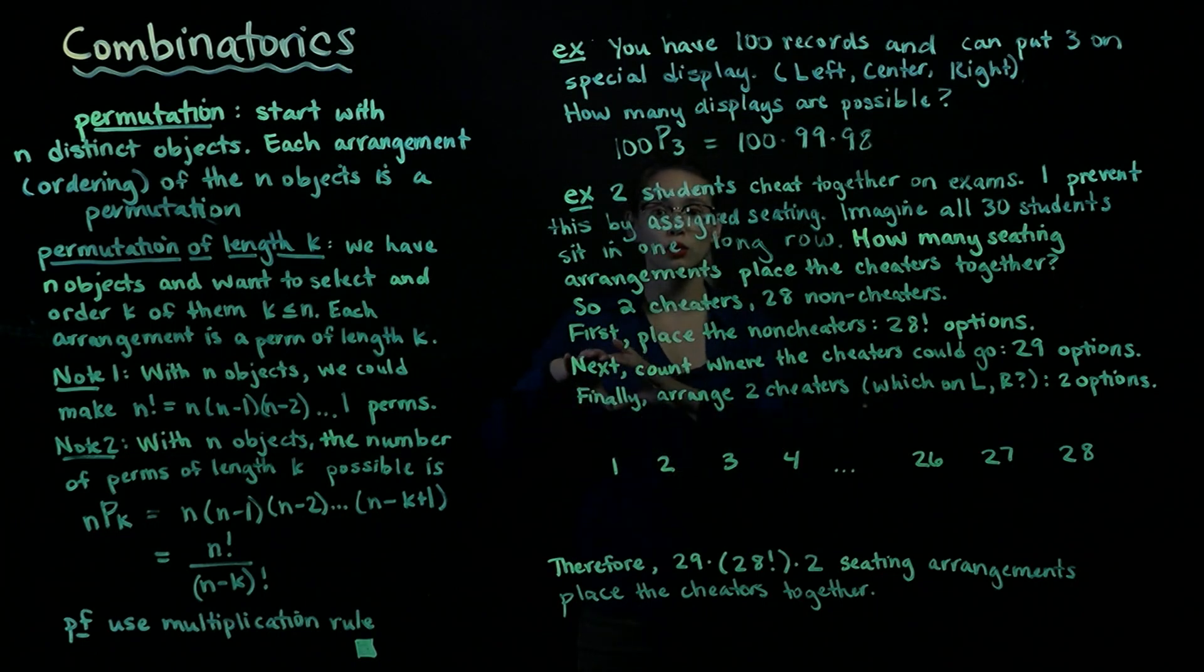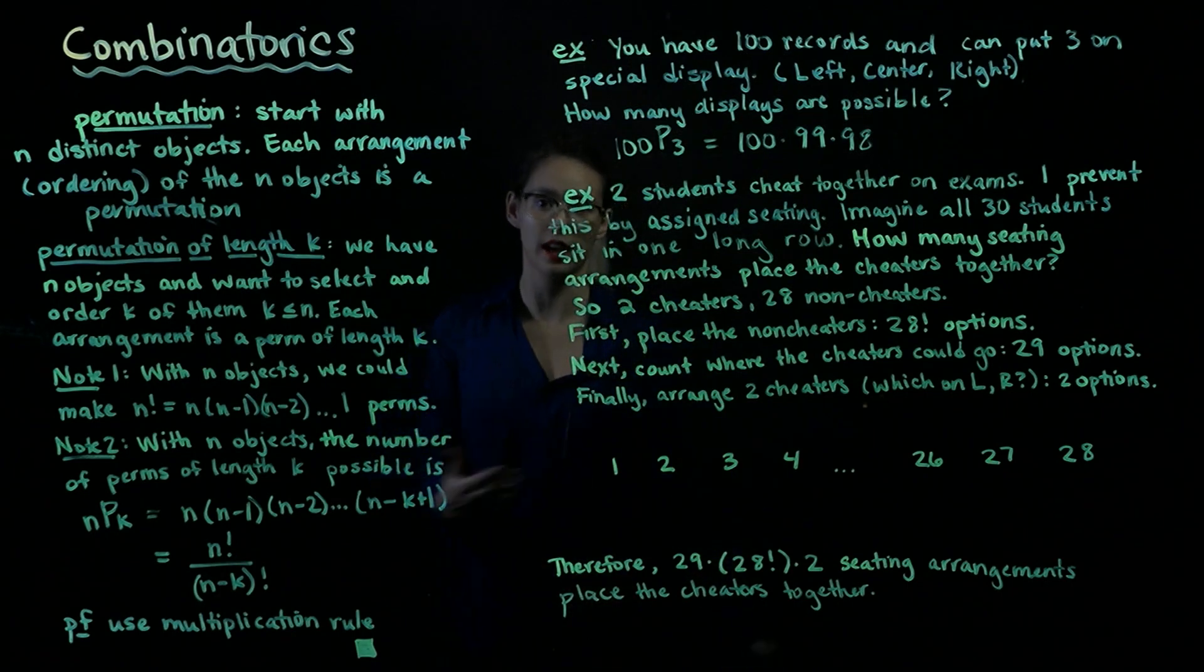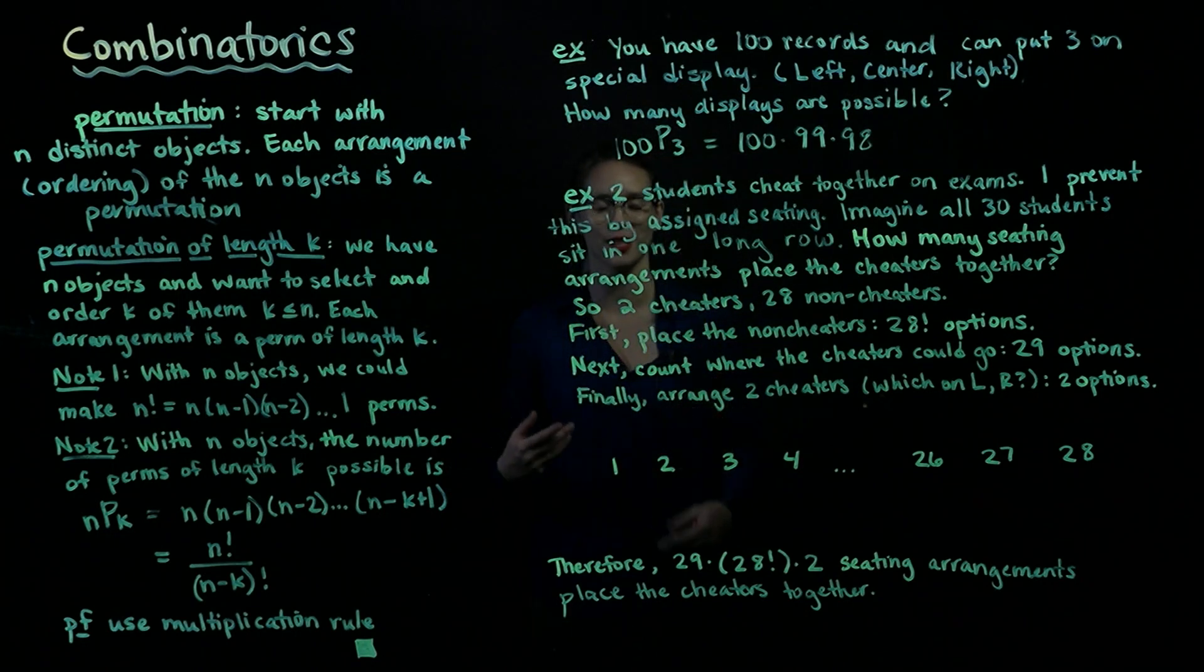Now, if we only want to choose some of the objects and then arrange them, we can call this a permutation of length k. So imagine we have n objects and we want to select k of them and order those k things. It's important that k is less than or equal to n because we can't have an ordering of more objects than we started with. So each arrangement is a permutation of length k.